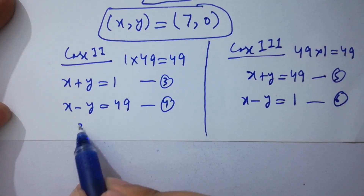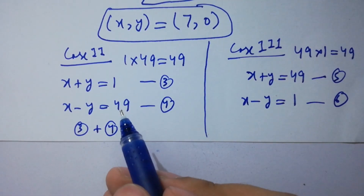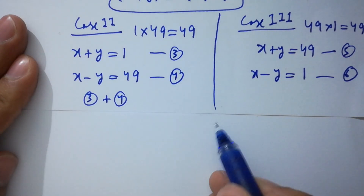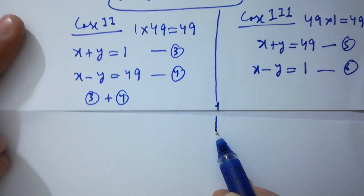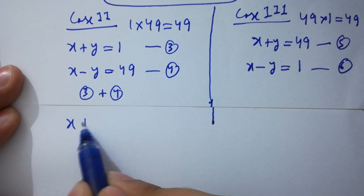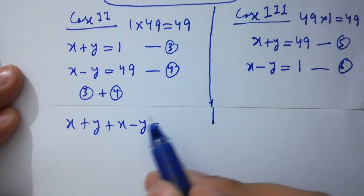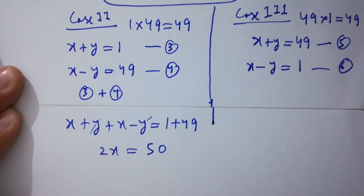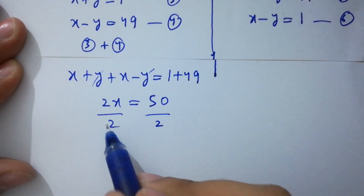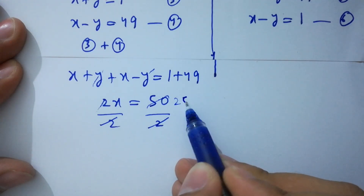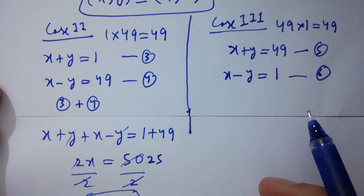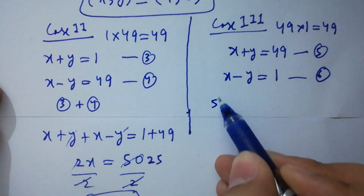Like before, adding equations 3 and 4, the y terms cancel, and we get 2x equal to 1 plus 49 equal to 50. Dividing by 2, x equal to 25. Similarly, adding equations 5 and 6 gives 2x equal to 49 plus 1 equal to 50, so x equal to 25 from the third case as well.